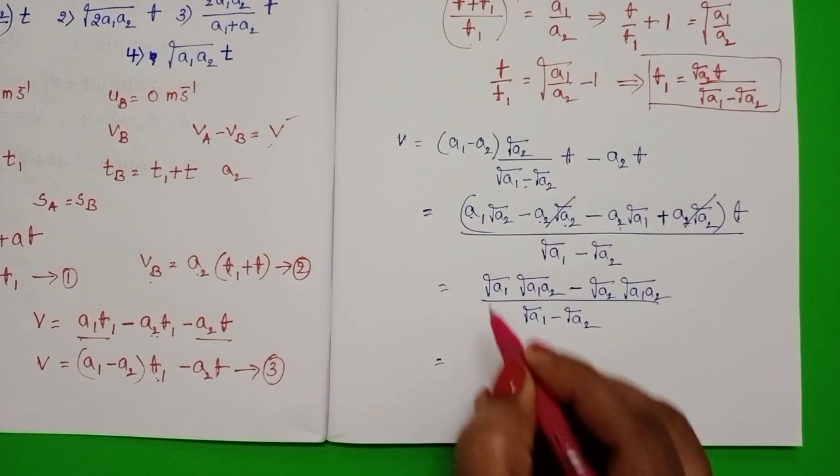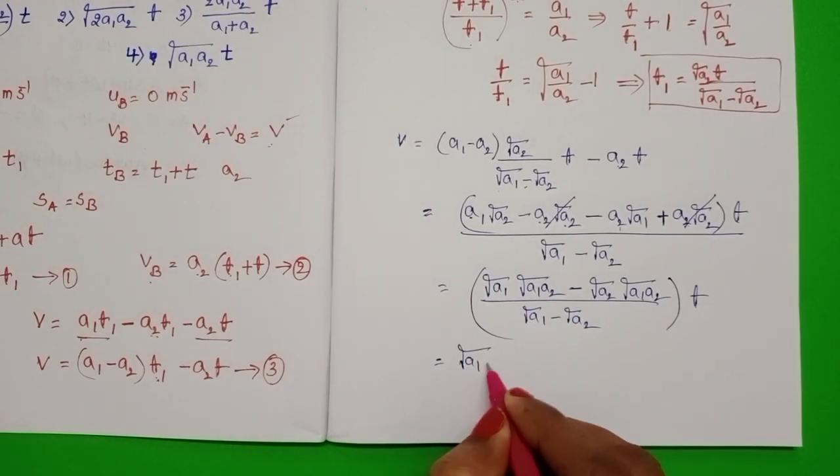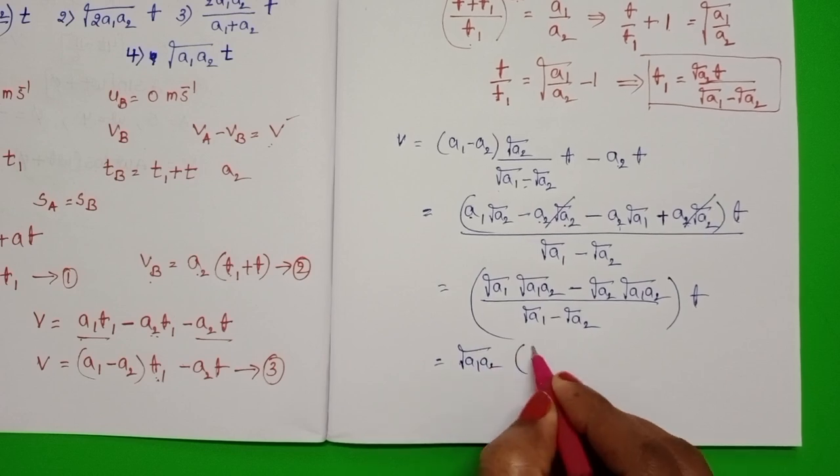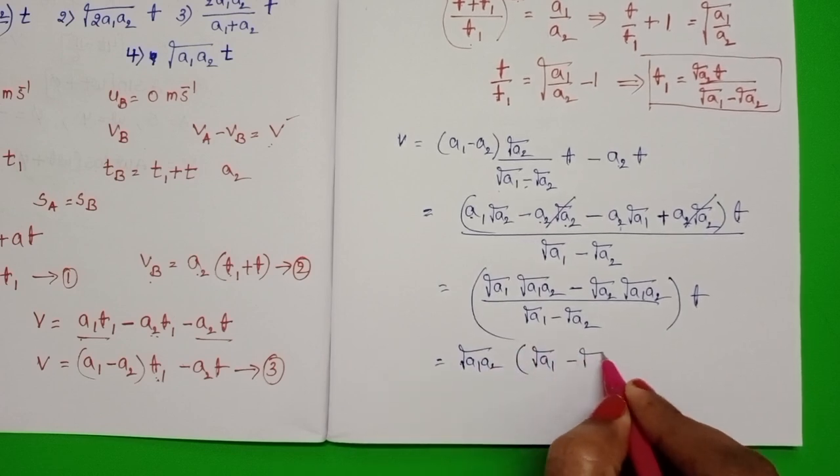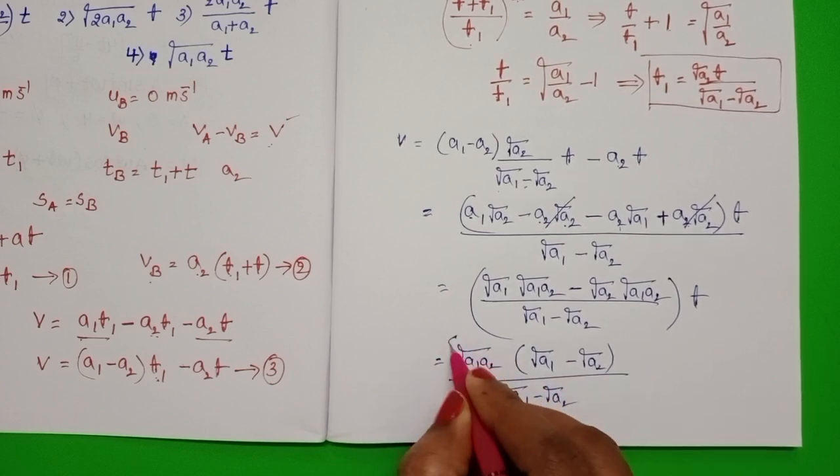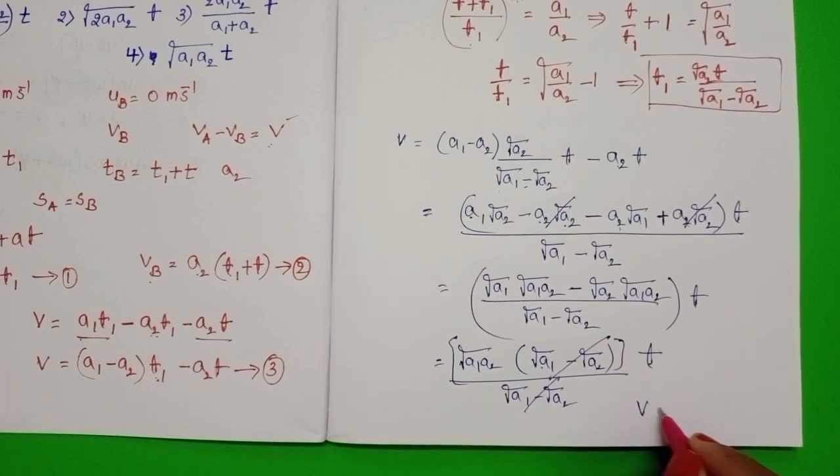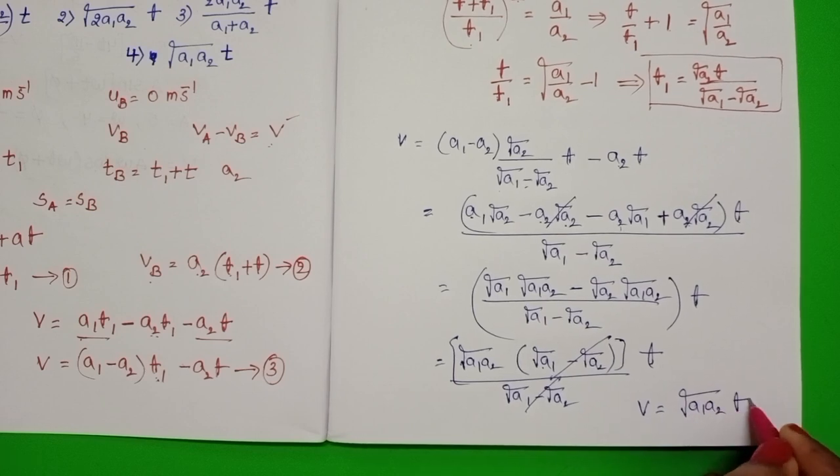And take square root of A1 A2 common. Here, time T is there. Square root of A1 A2 into root A1 minus root A2 by root A1 minus root A2 into T. These two terms get cancelled. So, V is equals to square root of A1 A2 into T. Fourth option is correct.